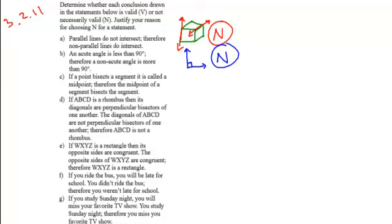You can see if a point bisects a segment, it's called a midpoint. So if you have a segment and you say that the point that bisects this is called a midpoint, therefore the midpoint of a segment bisects that segment. So this is a statement that you cannot find a counterexample to, therefore it's a valid statement or a valid conclusion.